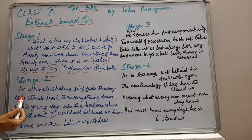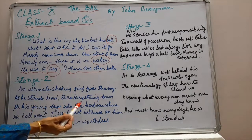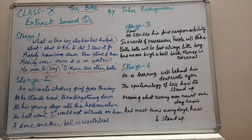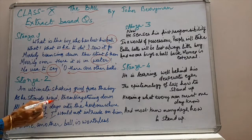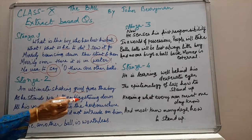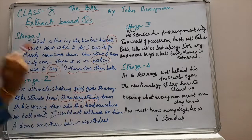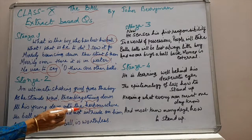Stanza 2: 'An ultimate shaking grief fixes the boy as he stands rigid, trembling, staring down all his young days into the harbour where his ball went. I would not intrude on him. A dime, another ball, is worthless.' How has the loss of the ball affected the child? The child has become grieved, stiff or motionless, trembling and nervous, and is staring at the ball. Where has the ball gone? It has gone into the harbour.